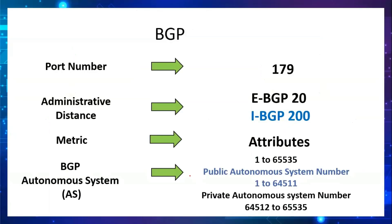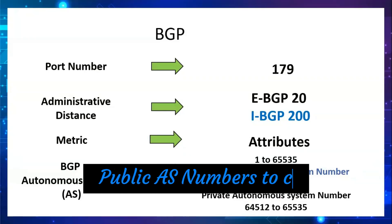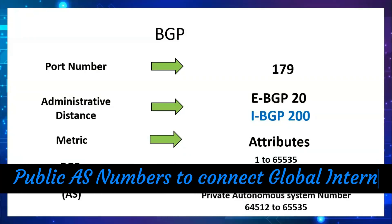In BGP we have two types of autonomous system numbers: private autonomous system and public autonomous system. The concept is similar to private and public IP addresses — public AS numbers are used on the internet side, while private AS numbers are used internally.